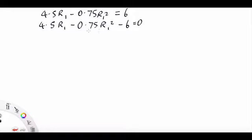The next thing I'm going to do is multiply it all by minus 1. We don't have to, but it just gets a positive term for R1 squared and I'm going to bring that out the front. So we have 0.75 R1 squared minus 4.5 R1 plus 6 equals 0.